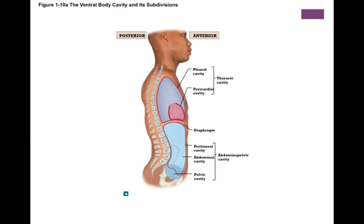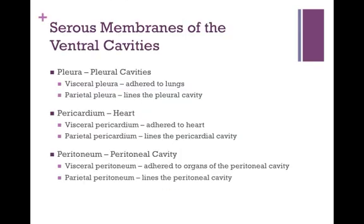In the thoracic cavity, you have the pleural cavities which contain the lungs — right and left pleural cavities. In between those two pleural cavities is a space called the mediastinum, and at the inferior aspect of that mediastinum is the pericardial cavity which contains the heart. Below the diaphragm is the abdominal pelvic cavity, which contains the peritoneal cavity housing the abdominal cavity and the pelvic cavity. There are three serous membranes that line these organs and cavities: the pleura, the pericardium, and the peritoneum.